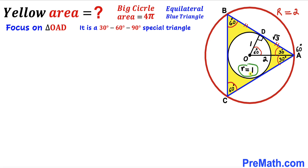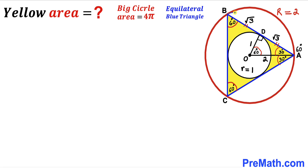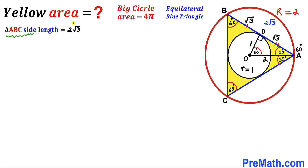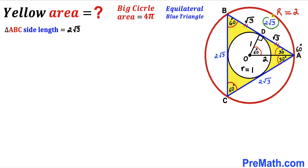Since AD = √3, and by the perpendicular bisector theorem BD = AD = √3, the full length AB = √3 + √3 = 2√3. Therefore the side length of equilateral triangle ABC is 2√3 units, and since it is equilateral, all three side lengths equal 2√3.